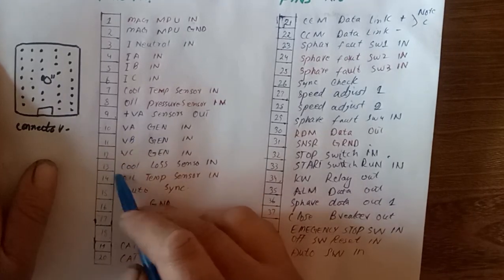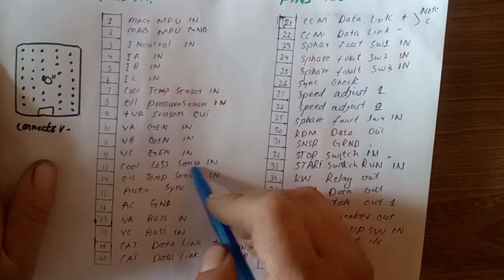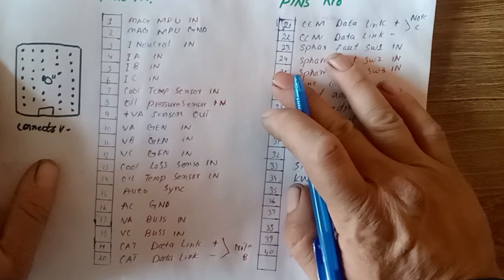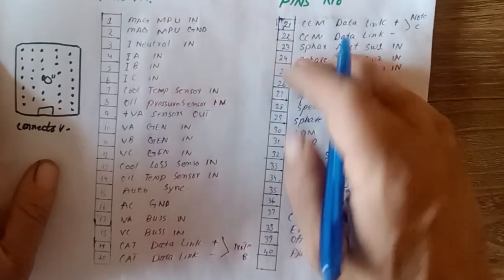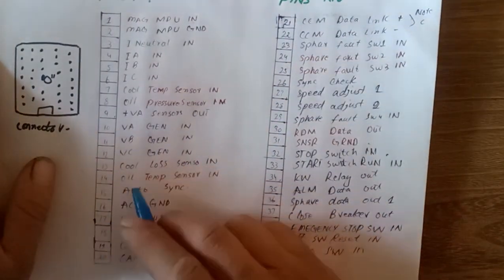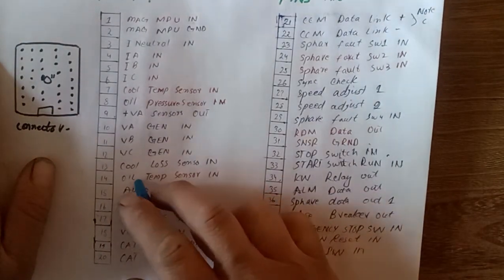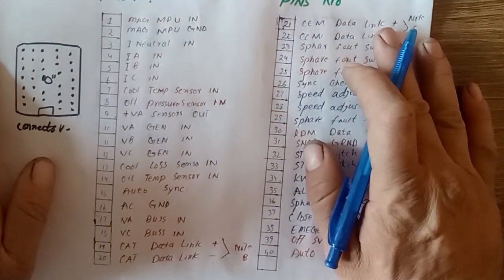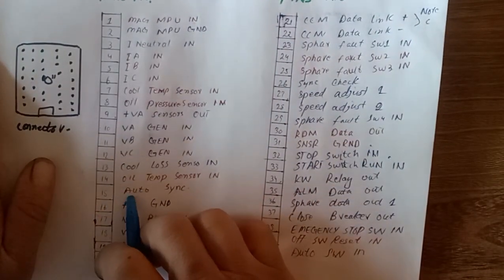Coolant loss sensor - what is meant by coolant loss sensor? It's mostly mounted on the radiator top tank which is sensing the coolant level. After that, oil temperature sensor, which determines the engine oil temperature for lubrication. Pin 15 is for auto synchronization - this controller can be used in synchronization.